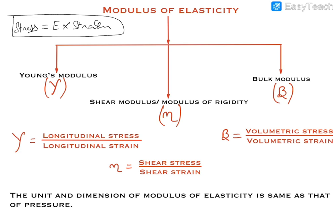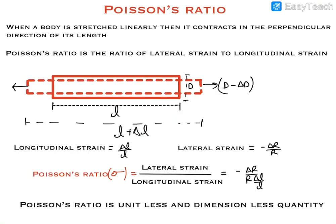Hello guys, welcome to Tesla Adventures. In this video we'll discuss Poisson's ratio. Imagine there is a rod, material, or wire which is stretched in one direction with some tensile force — its length increases.